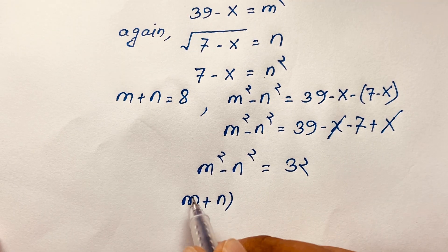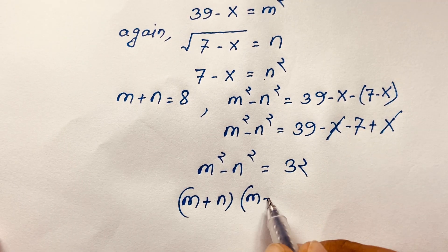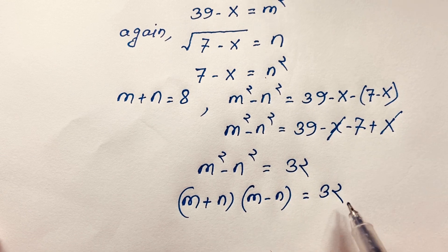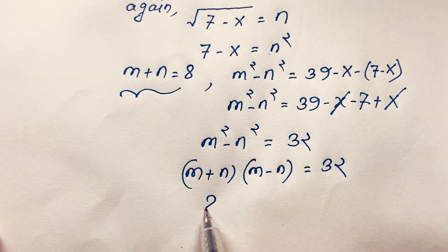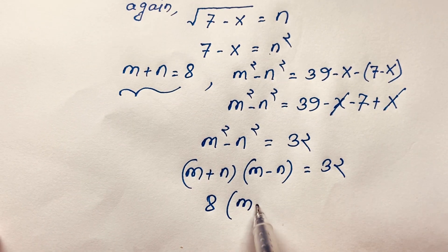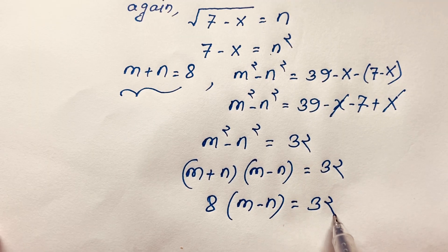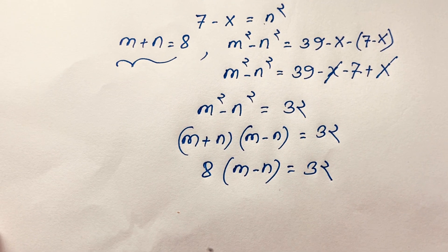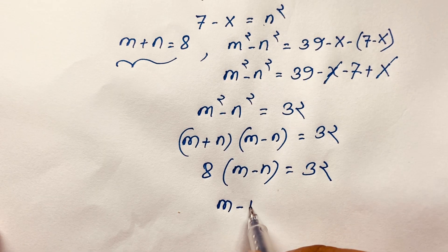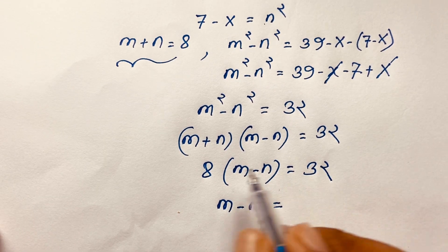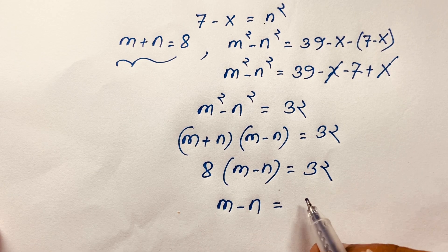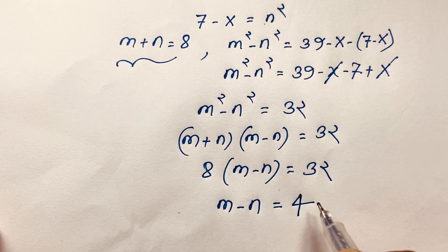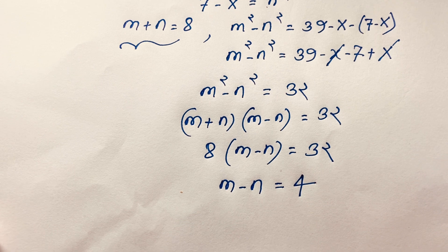Remember that a squared minus b squared equals (a plus b)(a minus b), so we have (m plus n)(m minus n) equals 32. Since m plus n equals 8, we substitute to get 8 times (m minus n) equals 32. Dividing both sides by 8 gives m minus n equals 4.